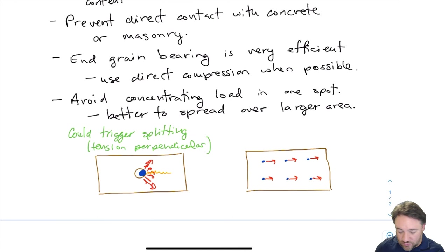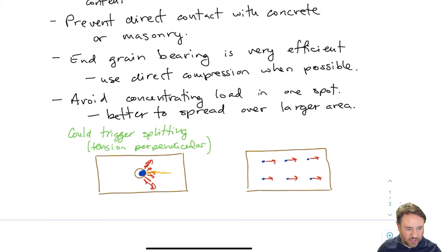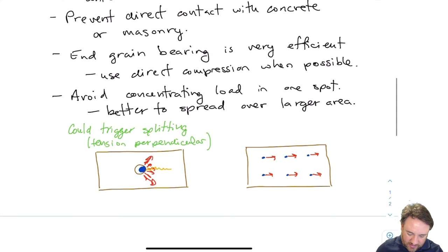It is often more efficient to use many smaller fasteners so that we don't get a large localized tension perpendicular stress, which is what those diverging force arrows represent — they cause tension perpendicular splitting. To avoid that problem, it's often better not to use really large diameter connectors whenever possible. One exception is split rings or shear plates, which spread the load over a larger area and serve a similar purpose.